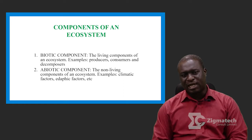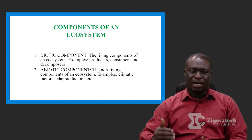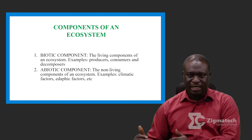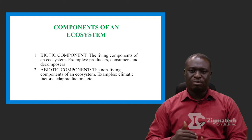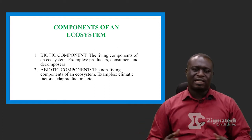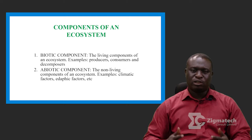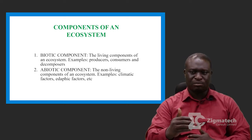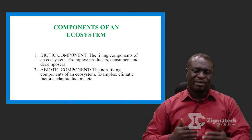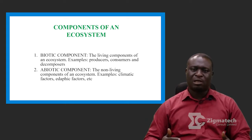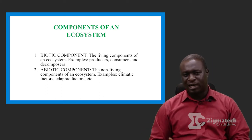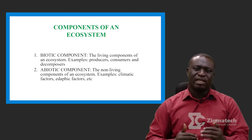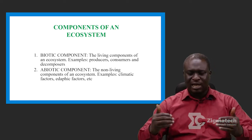The second component is the abiotic component. Abio is a Latin word that talks about non-living. So it is the non-living component of an ecosystem, and these include things like the climatic factors — where we talk about temperature, rainfall, sunshine — and how they relate with living organisms. We also have what we call the edaphic factors, which covers soil, soil profile, soil component, soil structure, and soil texture, and how they relate with living organisms and their functions in an ecosystem.